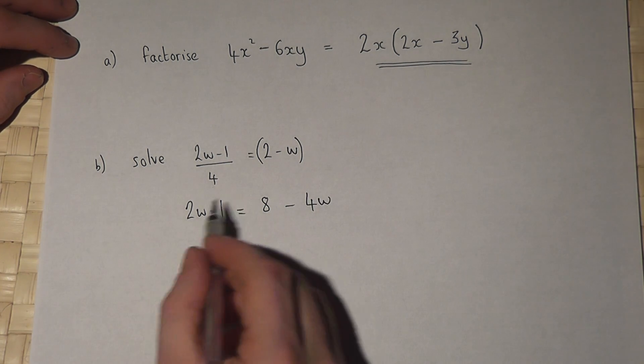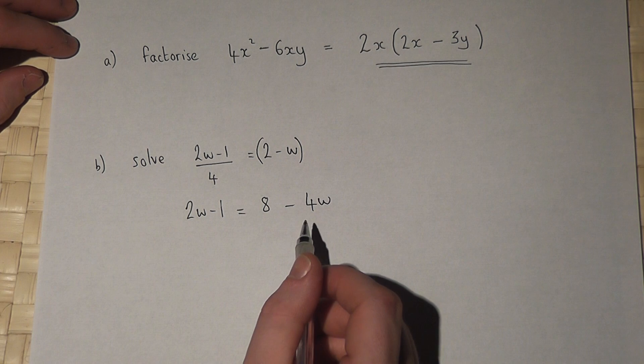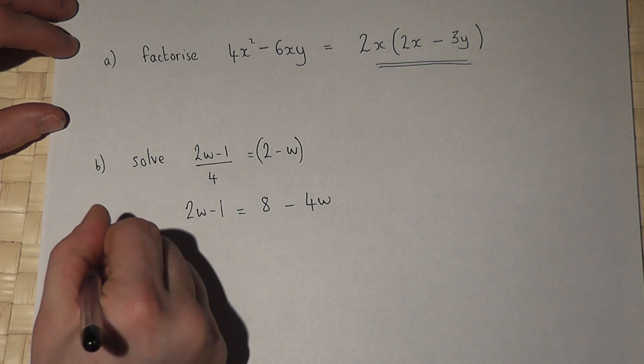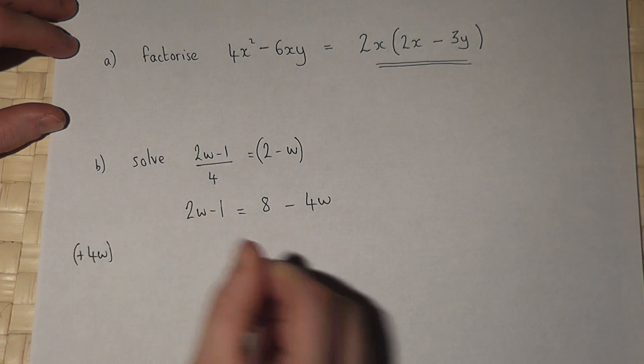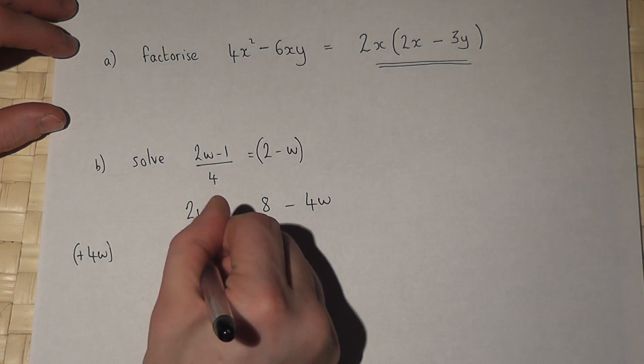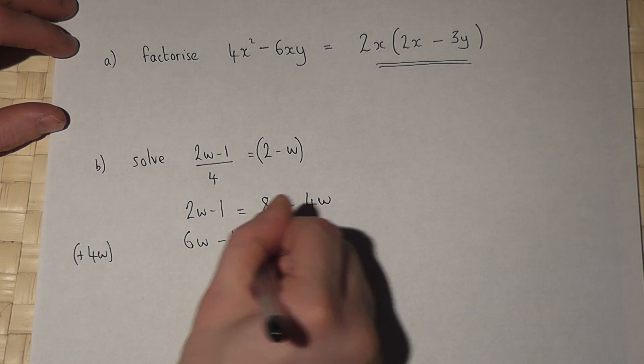Now I've got W's here and here, so I must get my W's to the same side. So if I add 4W, this becomes 6W, take away 1 equals 8.